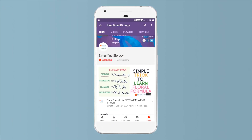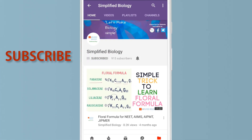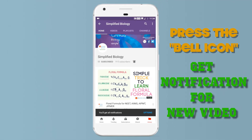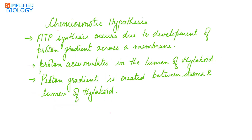Subscribe to Simplified Biology channel and press the bell icon to get notified when a new video is uploaded. Welcome to Simplified Biology. Today I'll continue with the chapter photosynthesis — specifically the chemiosmotic hypothesis. During chemiosmotic hypothesis, ATP synthesis occurs.